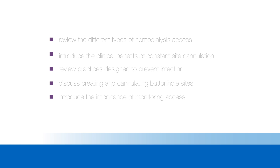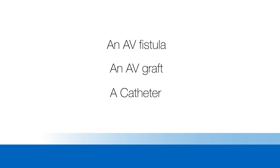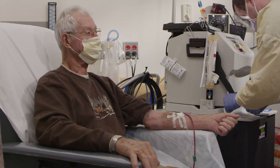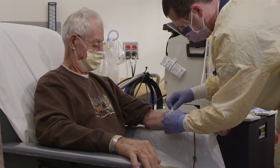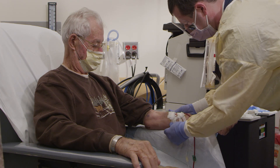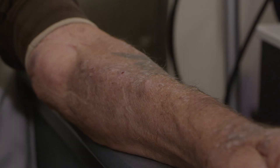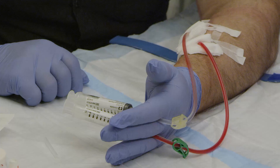To begin, let's review the different access types. There are three types of access: an AV fistula, an AV graft, and a catheter. An AV fistula is made during outpatient surgery by connecting an artery to a vein. This causes the vein to get larger and stronger, so that larger dialysis needles can be used.